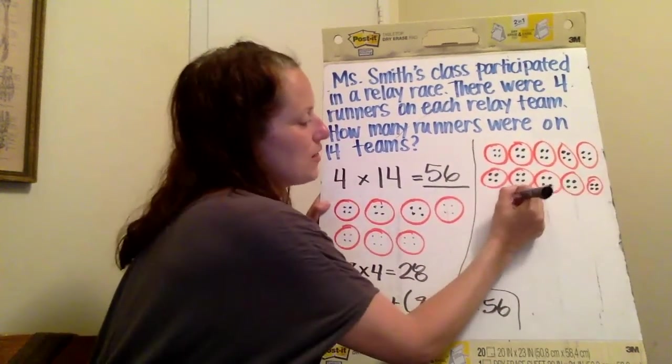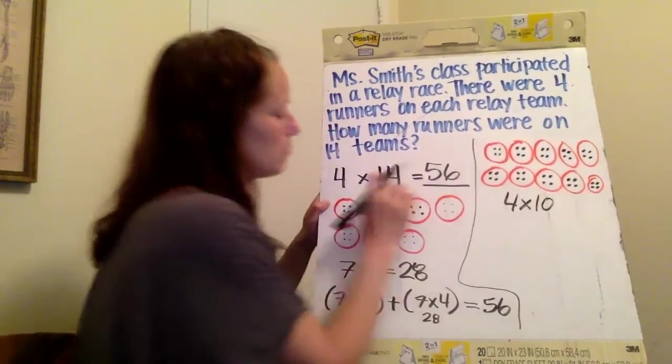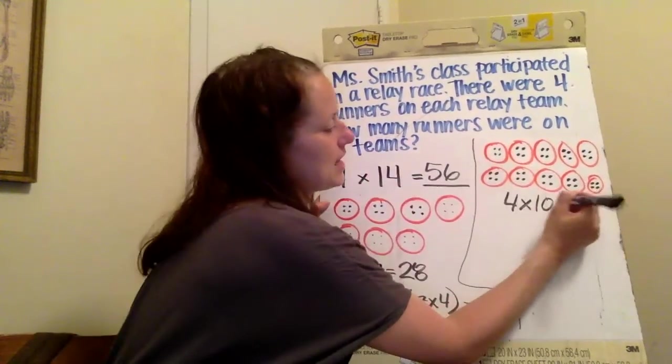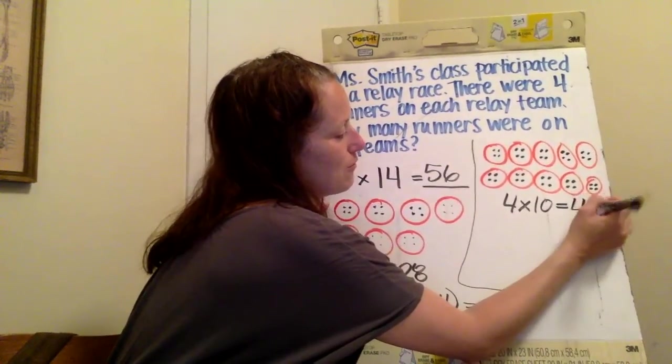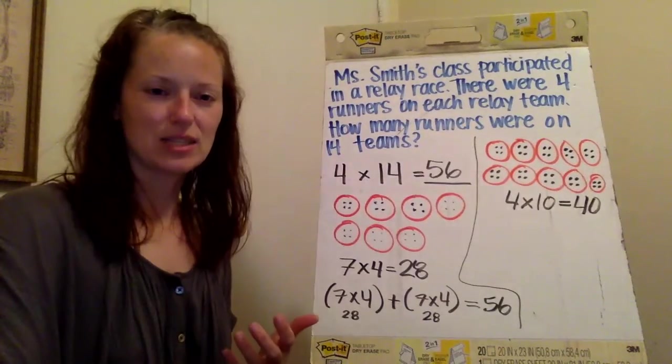And remember, I said I knew that four times 10. So I broke up my 14 into 10 and four. Four times 10 is equal to 40. I knew that. But what do I need to do still?